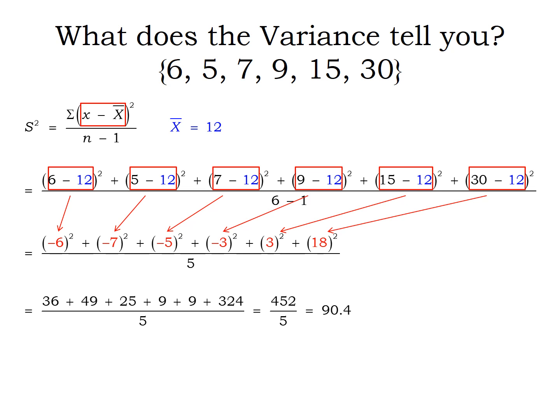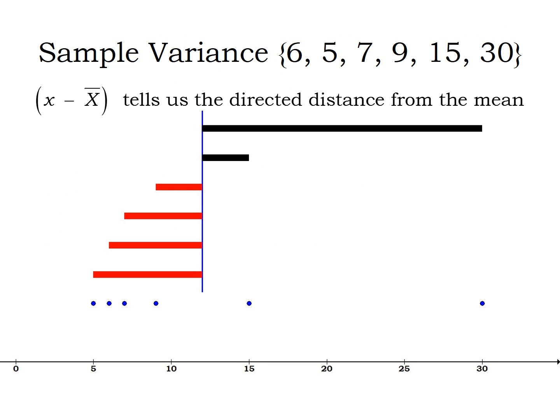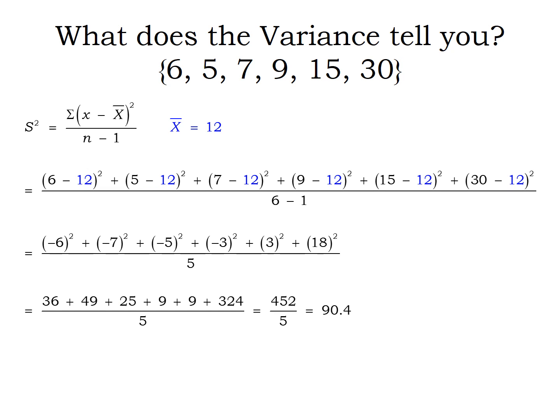So this term, x minus x̄, we're comparing the location of a data value to our point of reference, the mean. So x minus x̄ tells us the directed distance from the mean. So the x minus x̄ told us not only the distance that point was from the mean, but which direction.